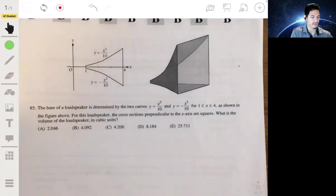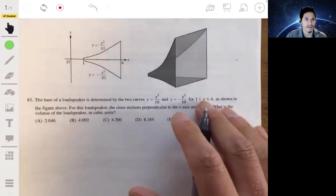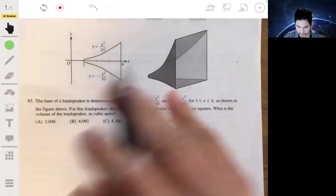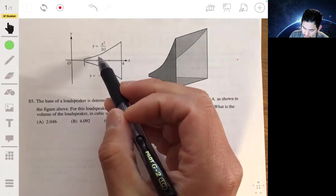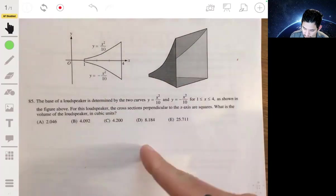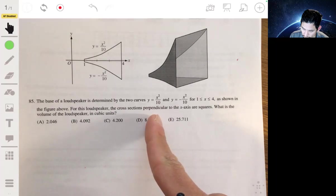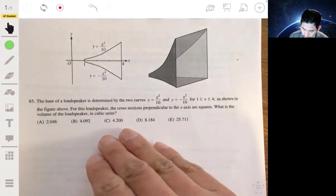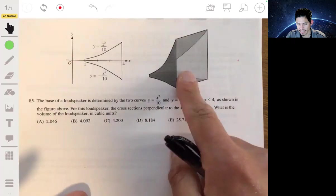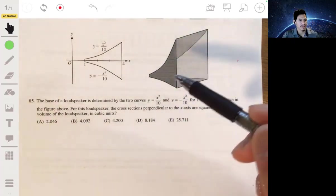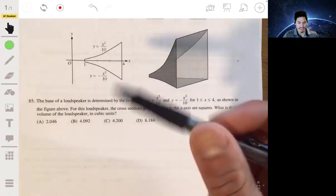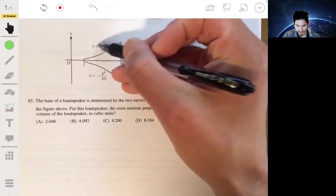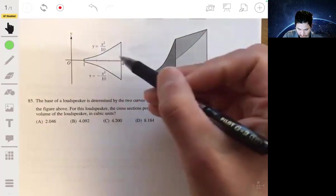Okay, my favorite type of problems. I know some students struggle with these, but once you get it, it's actually not too bad. So you're trying to find the volume of, I guess this is a loudspeaker. The loudspeaker has the base bounded by these two equations from 1 to 4.